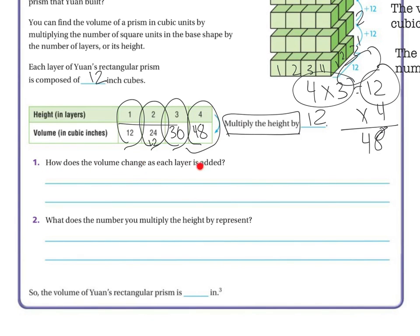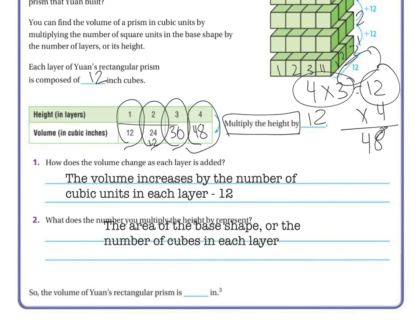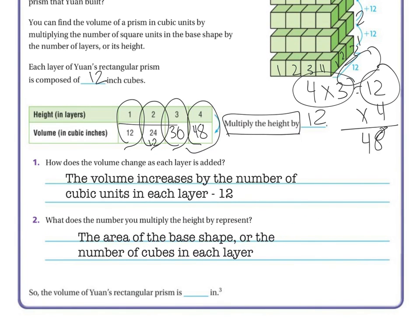How does the volume change as each layer is added? The volume increases by the number of cubic units in each layer — in this case, 12. What does the number you multiply by the height represent? It represents the area of the base shape, or the number of cubes in each layer. So the volume of One's rectangular prism is 48 inches cubed.